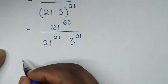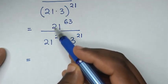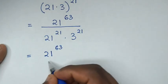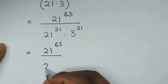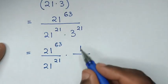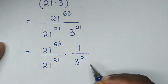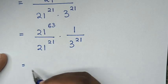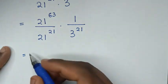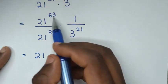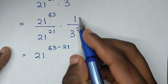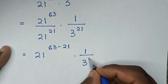Then, in the next step, it will be equal to: we divide the exponent with the same base of 21, so it will be 21 power of 63 over 21 power of 21, then times 1 over 3 power of 21. Division of exponents with the same base but different powers gives us 21 to the power of 63 minus 21, times 1 over 3 power of 21.